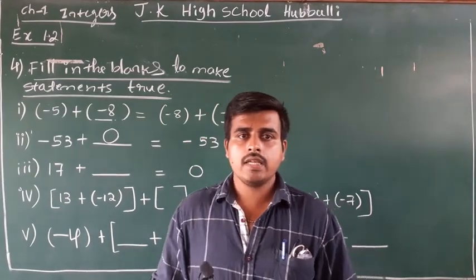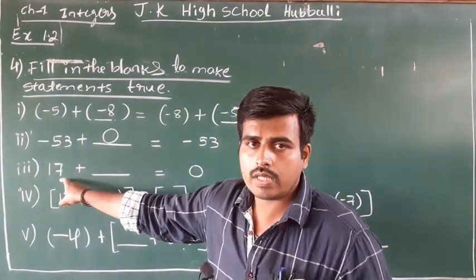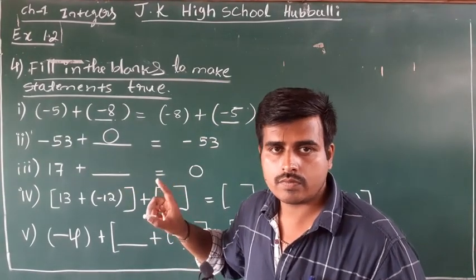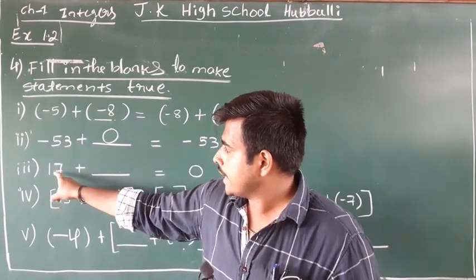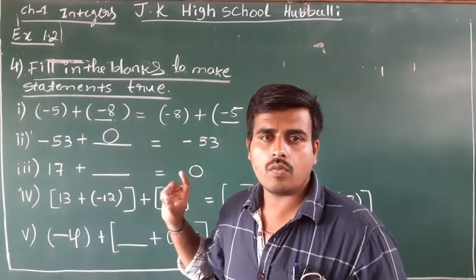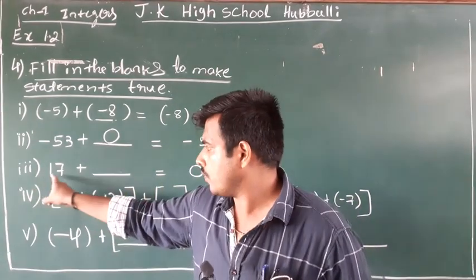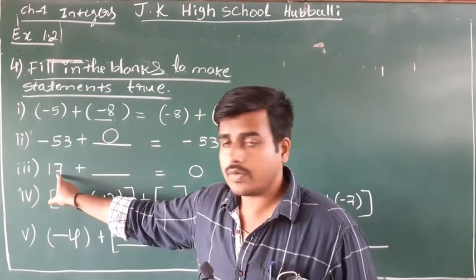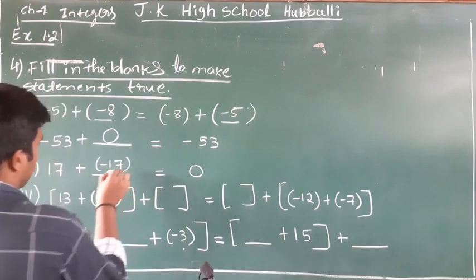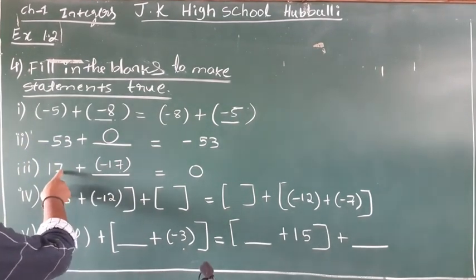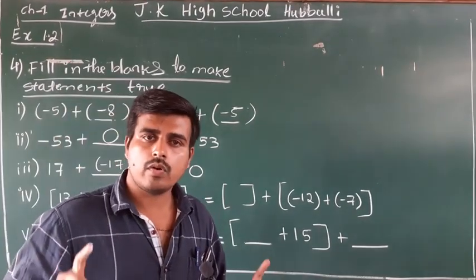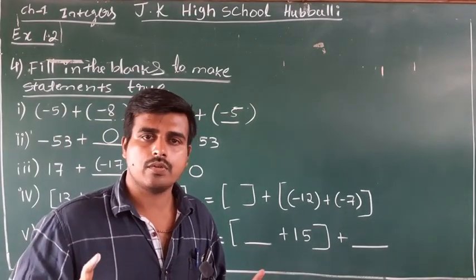Third question: 17 plus blank gives you zero. By adding a particular number to any number, if the result is zero, that number is called the additive inverse. The additive inverse of 17 is minus 17. By adding minus 17 to 17, you will get zero. All fill-in-the-blanks depend upon one or another property — you just have to recall it.